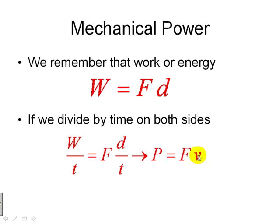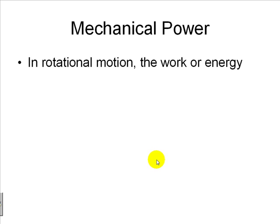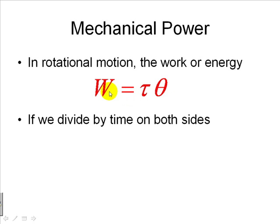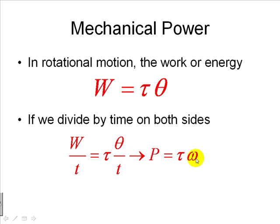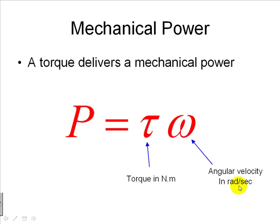Force in newtons, velocity in meters per second, and power in watts. Now in rotational motion, the work or energy is applied by a torque. The body rotates a certain angle in radians and energy is delivered in joules. If we divide by time both sides, what we get is power on the left-hand side and torque multiplied by angular velocity on the right-hand side. A torque delivers a mechanical power P proportional to the angular velocity of rotation. The torque is given in newton-meters, the angular velocity in radians per second, and the power in watts.